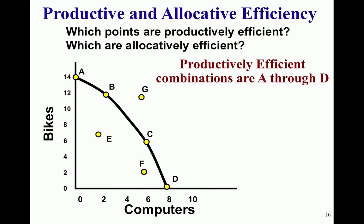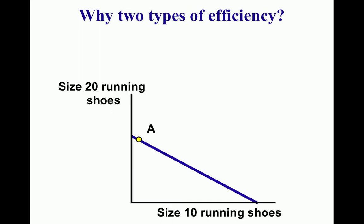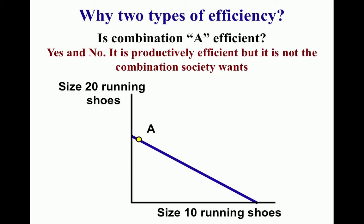Points A, B, C, and D could all be allocatively efficient, and all of them are productively efficient. For example, if there was a country with no electricity, there would be no reason to have computers because you couldn't plug them in. Consider combination A — is it efficient? Yes and no. It is productively efficient because it's on the line, but common sense tells us we're not going to want to produce almost all size 20 running shoes, because people with size 20 feet are pretty rare. The allocatively efficient point would probably be more towards size 10 running shoes. Simply put, allocative efficiency is what is optimal for society.